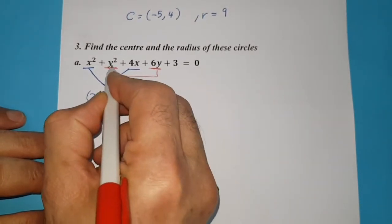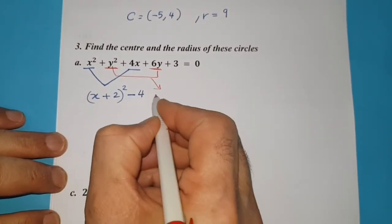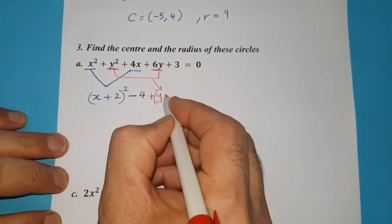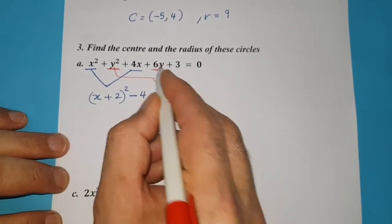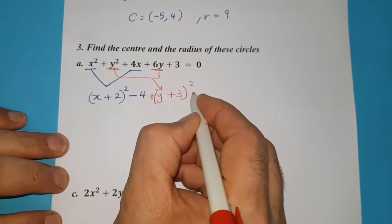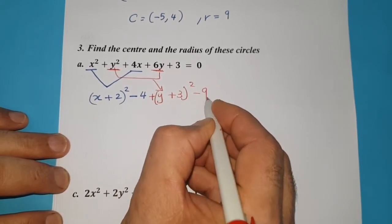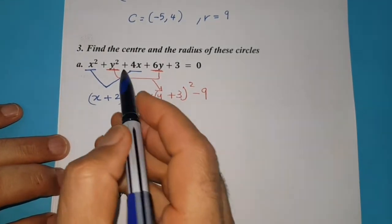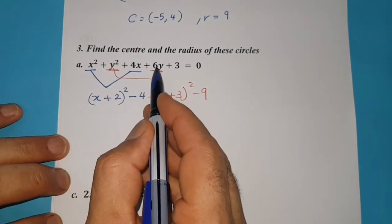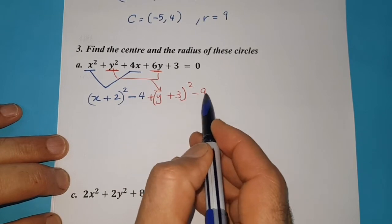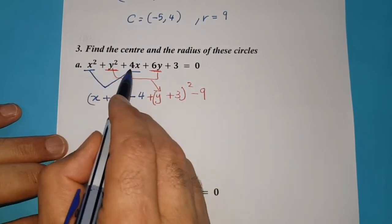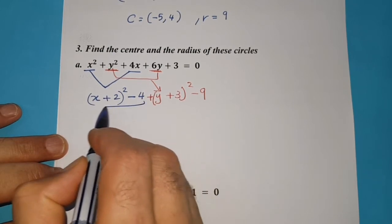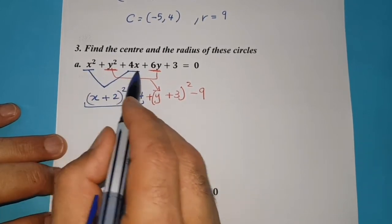For the two terms of y — y squared and 6y — these two terms can also be written in this form: (y plus half of 6, which is 3) all squared, minus that number squared, which is 9. So y squared plus 6y is (y plus 3) all squared minus 9. And x squared plus 4x is (x plus 2) all squared minus 4. If you expand this again, you will get exactly x squared plus 4x.